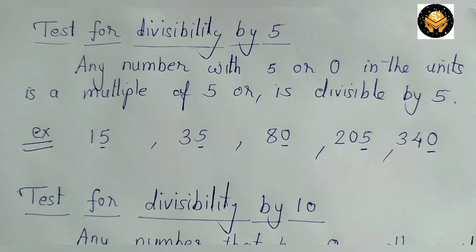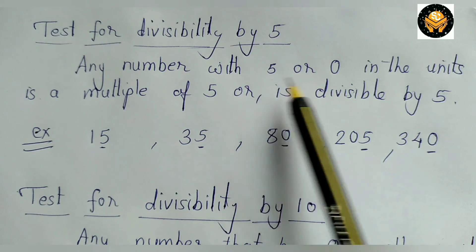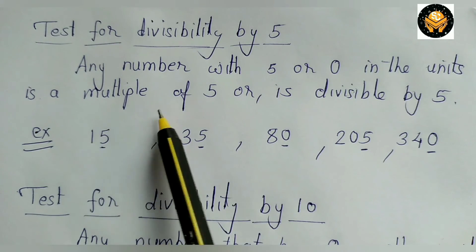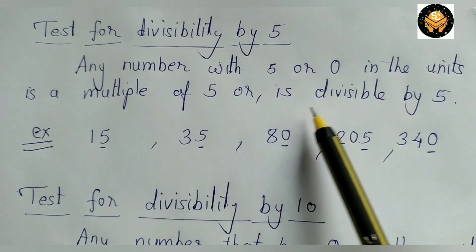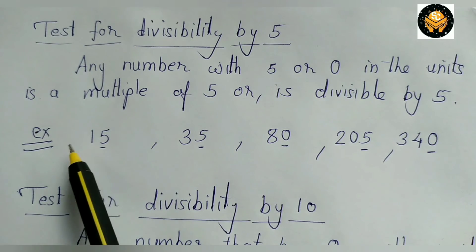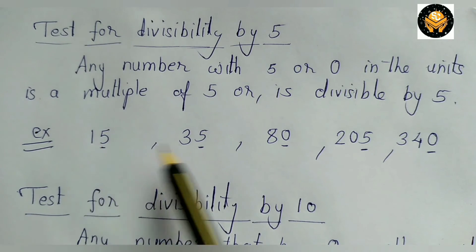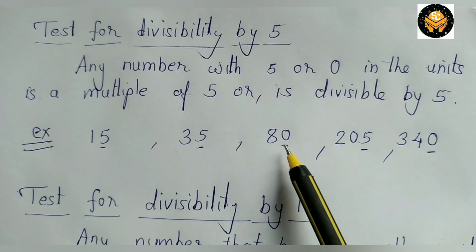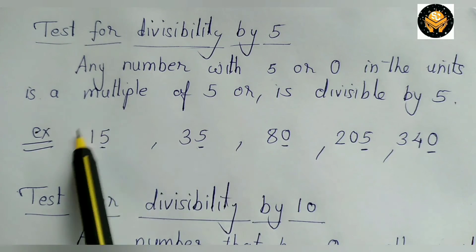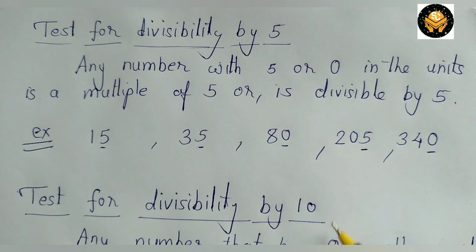Now let's see the divisibility test for 5. Any number with 5 or 0 in the unit place is a multiple of 5 or is divisible by 5. Numbers with 5 or 0 in the unit place are all divisible by 5.